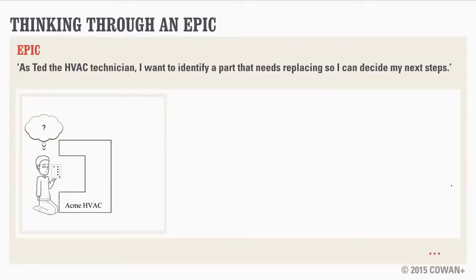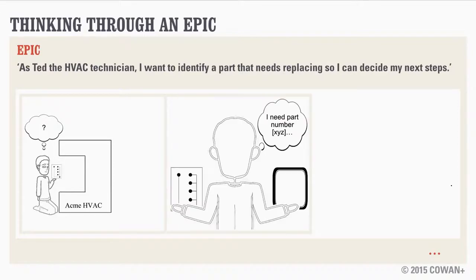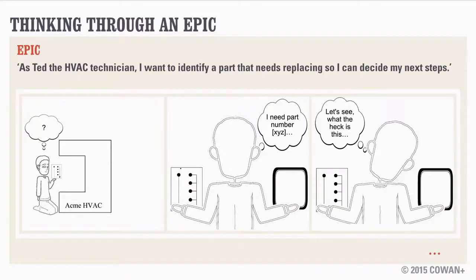Let me take you through this and you can see what you think. I show Ted here finding the part he needs to identify and potentially order. We have our first case: he knows the part number, or maybe it's printed on the thing somewhere. The second case — a parallel case — is that he doesn't know the part number, but thinks that through the reference materials we're going to make available for him, he can figure it out.